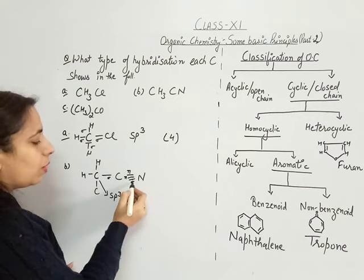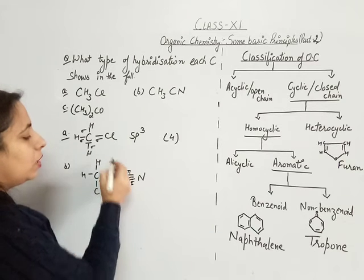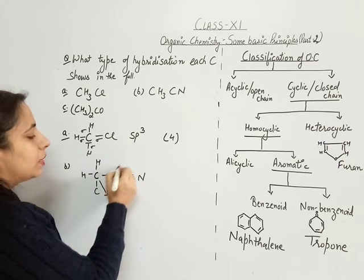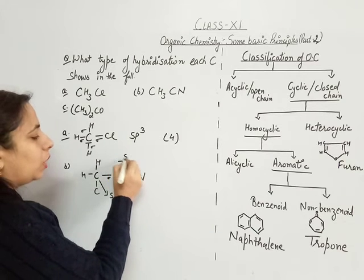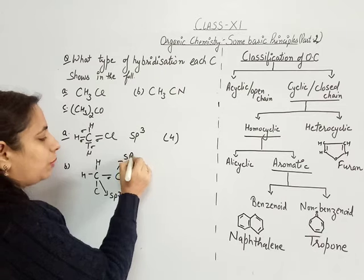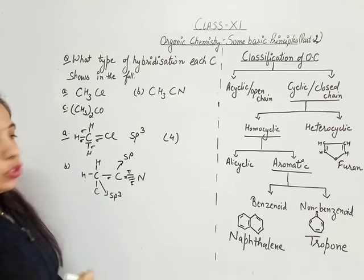Because two sigma bonds are forming here, this carbon is showing SP hybridization.